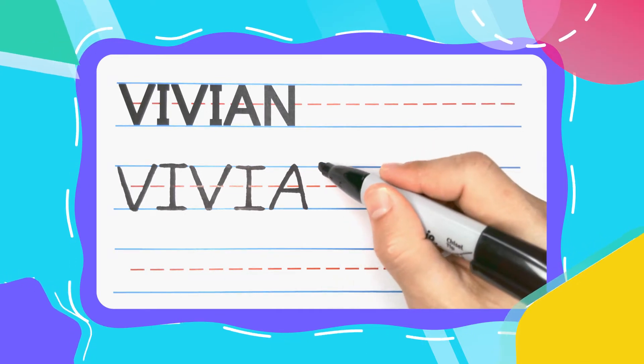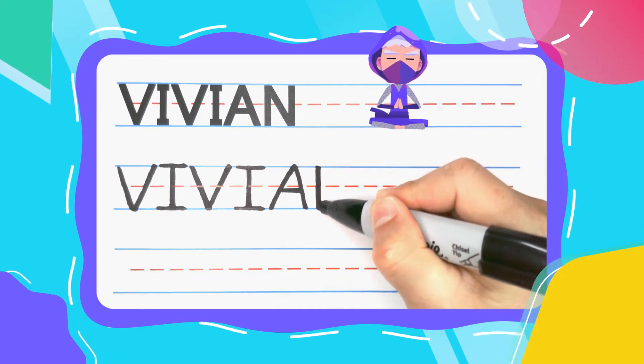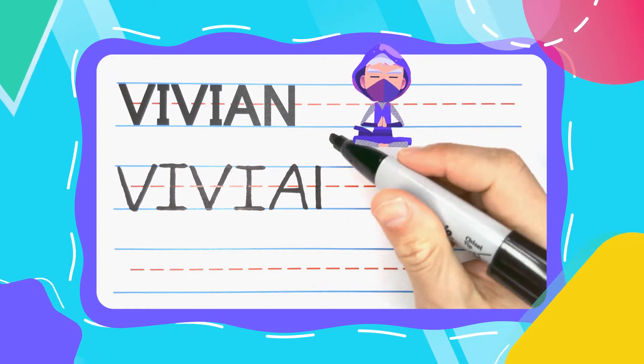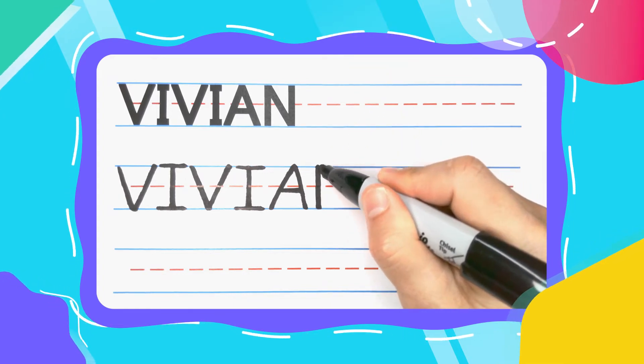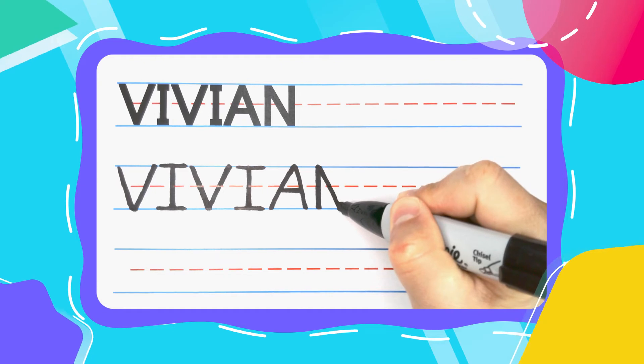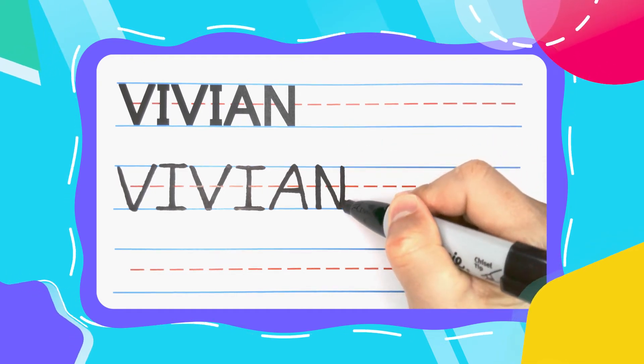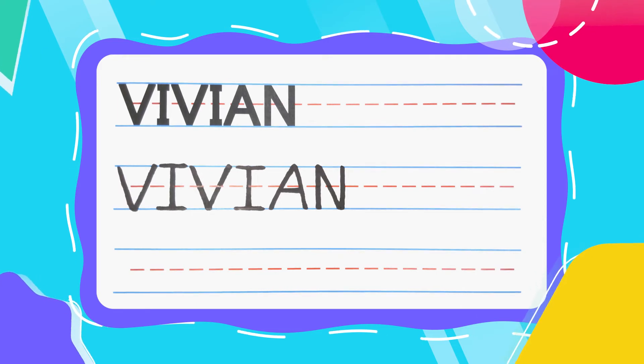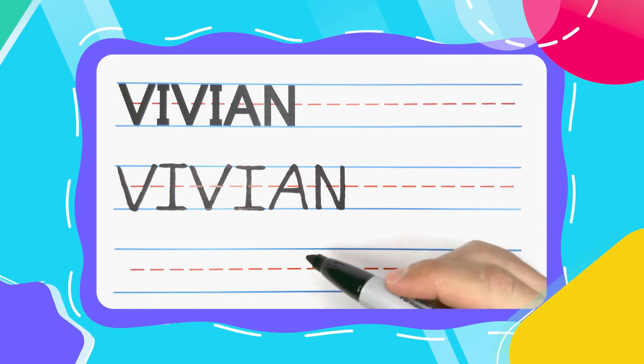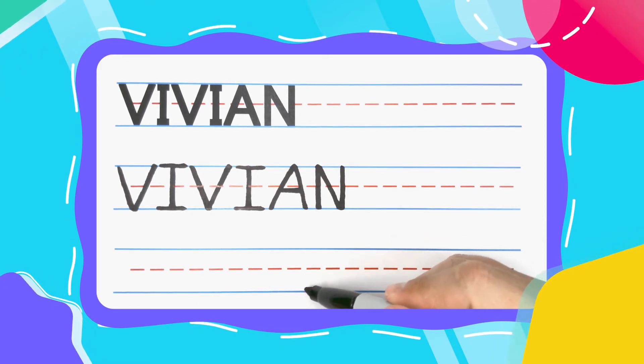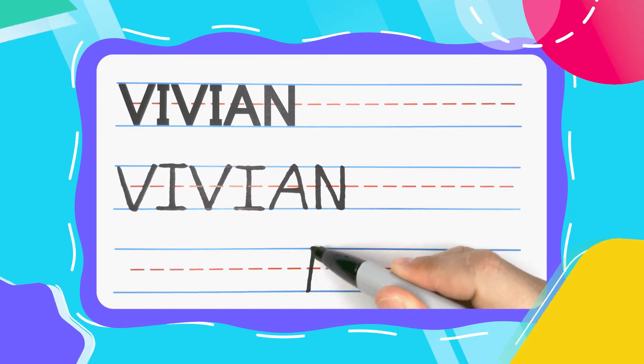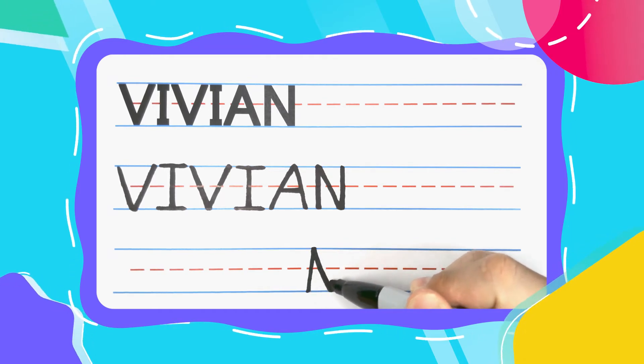The last letter in Vivian is the ninja N. Ninja Ns start with a straight line down, come back to the top, diagonal down to the bottom, come straight back up, and do another straight line down to complete your N. You can also draw ends wild style. Watch this. Never take your pen up off the paper. It's just a zig-zag-zog.